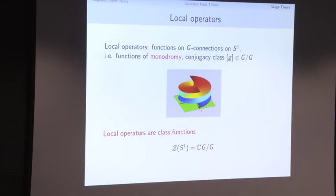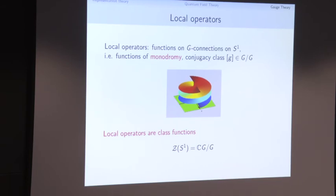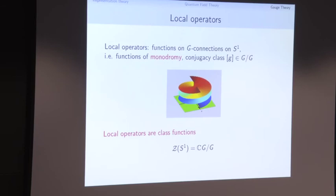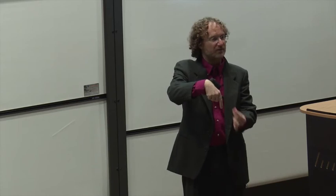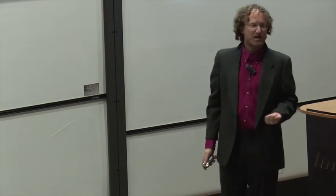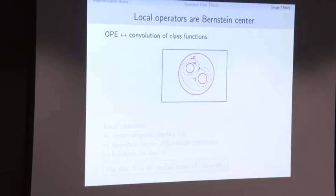In a non-abelian group, the element you get depends on where you started to measure — so what you really get is a conjugacy class of G. Connections on a circle are given by conjugacy classes in G. So local operators in Yang-Mills theory are functions on conjugacy classes — exactly class functions. We see the space of class functions appearing naturally as functions on connections on the circle. And we saw class functions before as the center of the group algebra. So the multiplication of local operators — given by putting two disks inside a big disk — works out to be exactly the group algebra multiplication.